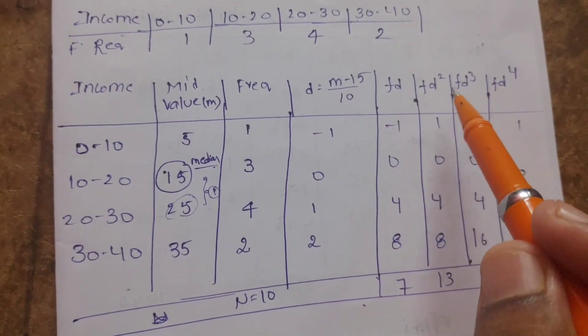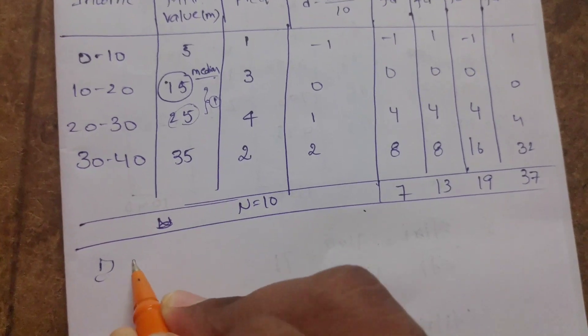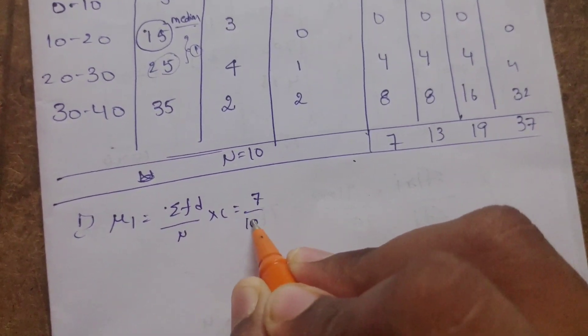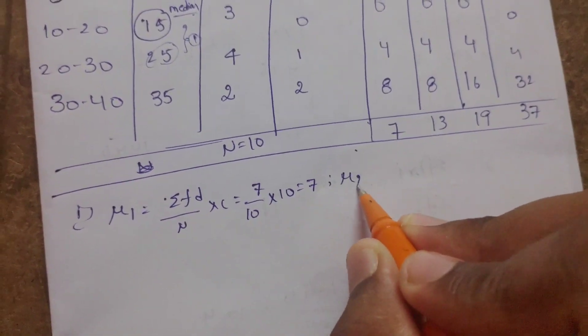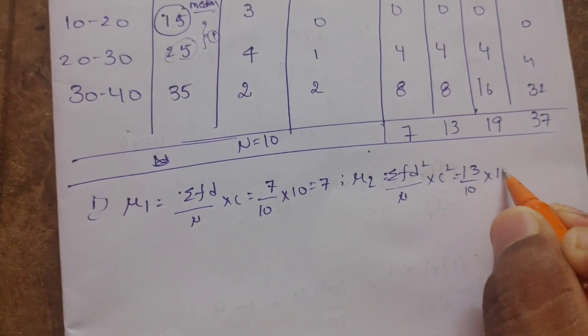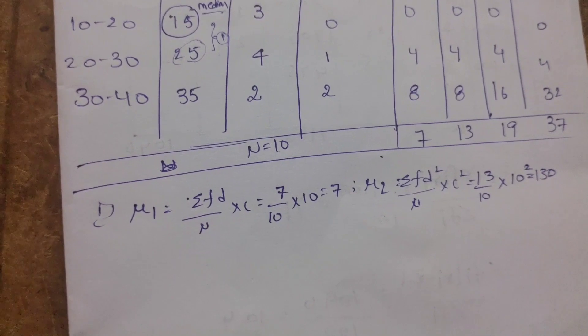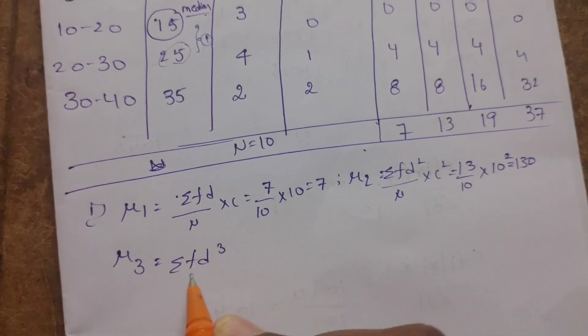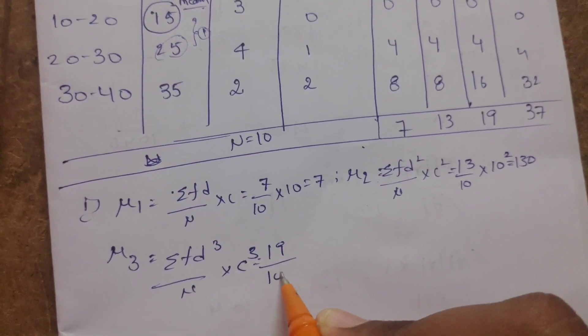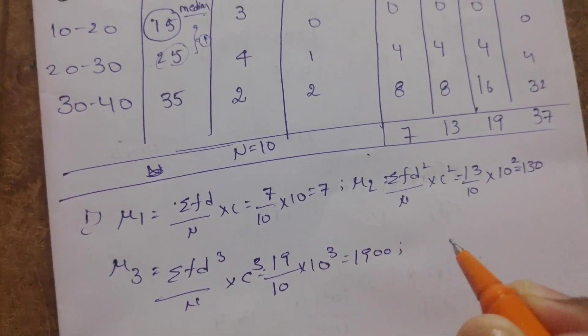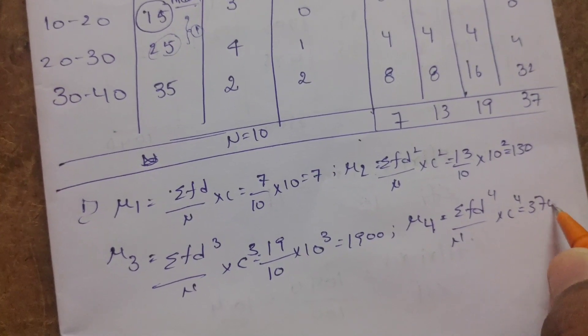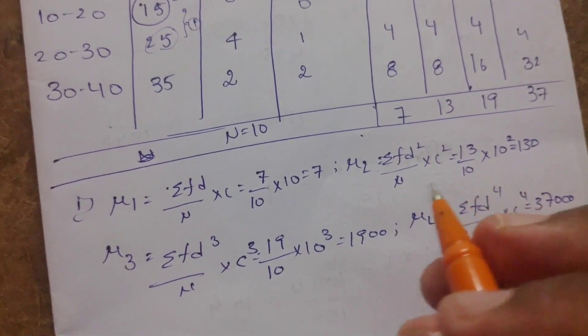The first four moments: mu1 equals sigma fd by n times c, which equals 7 by 10 times 10 equals 7. For the first four moments, first moment is sigma fd by n, second moment is squared, third moment is cubed, and fourth moment is to the power of 4. So mu3 equals 19 by n, where n equals 10, times 10 cubed is 1000, giving 1900 divided by 1000. Mu4 equals 37 by 10 times 10 to the power 4, which is 37,000 divided by 10,000.